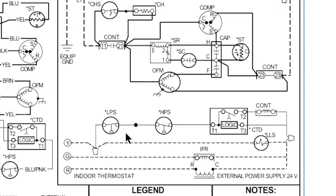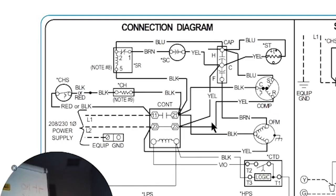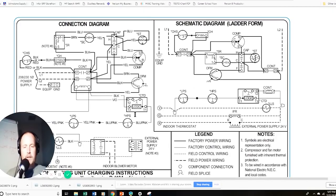The biggest things to know are that every symbol has a meaning, and understanding those meanings helps you understand how the system is operating — you can even catch manufacturer mistakes. The connection diagram shows everything in a position closer to how it appears physically, which is helpful for locating components inside the unit. The schematic diagram is really the way to go for diagnosis and tracing out a circuit. Here's a simple ladder schematic example — everything connected between L1 and L2, tracing across from one side to the other.